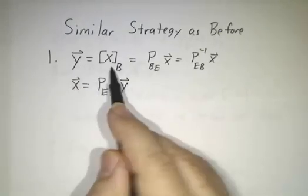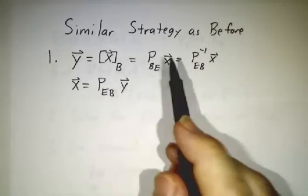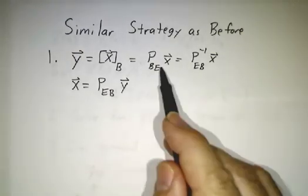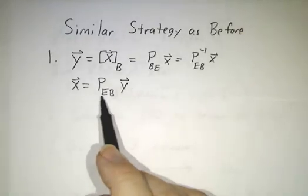We want to write y to be the coordinates of x in that basis. And you use a change of basis matrix to convert from x to y, and you use the inverse matrix to convert from y to x.